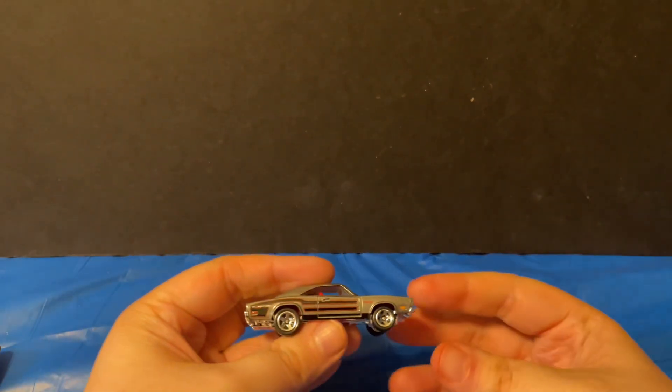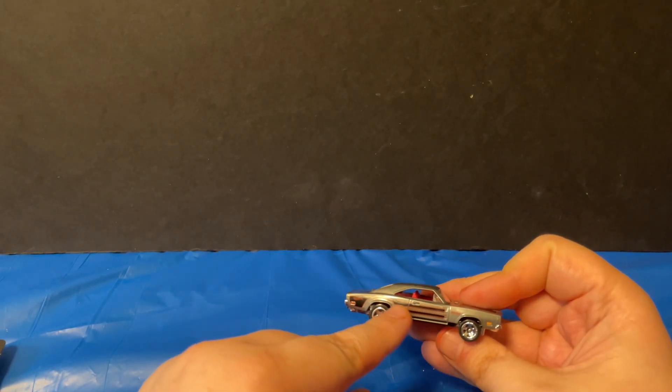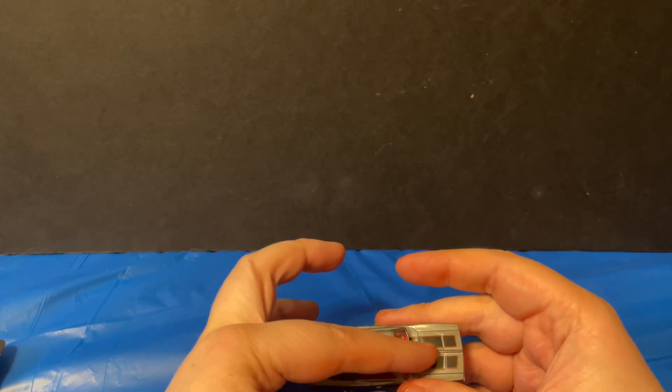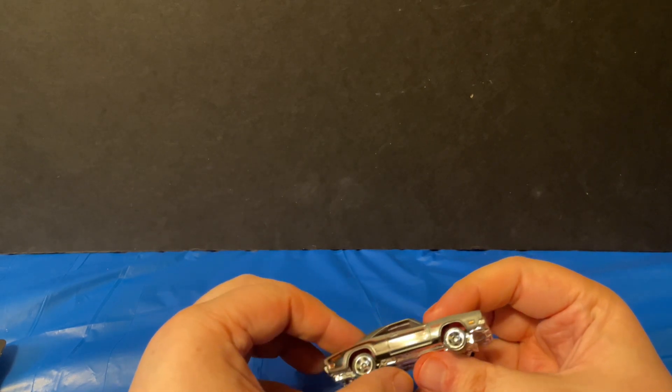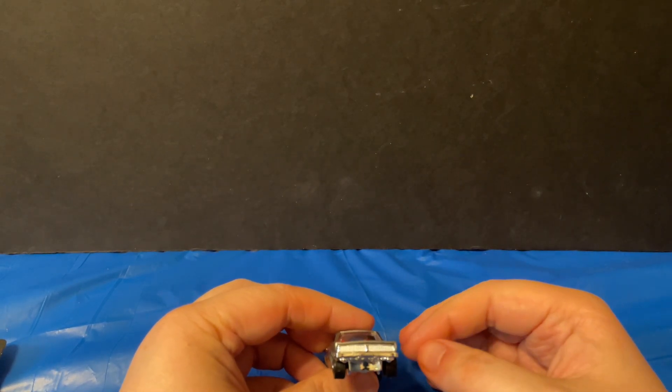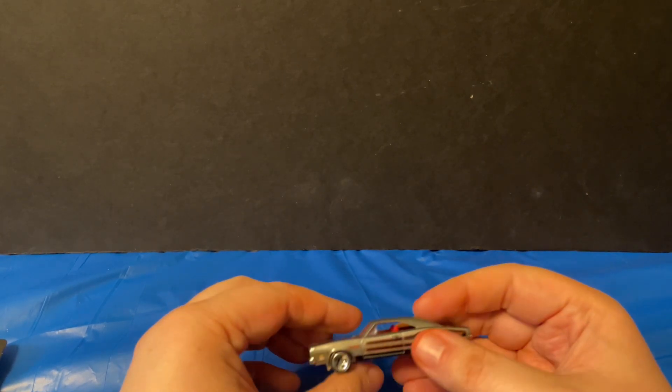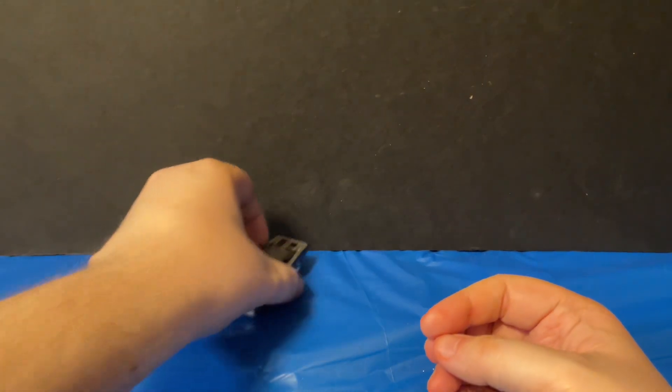When you take it out of the packaging, you can notice that it has a gray body color and then it has black and red stripes going up the side. It also has the same black and red stripes going up the hood as well. It has red interior with five-spoke rims, chrome front end and chrome tail end as well. So no painted on headlights or taillights, but overall pretty cool looking Dodge Charger.